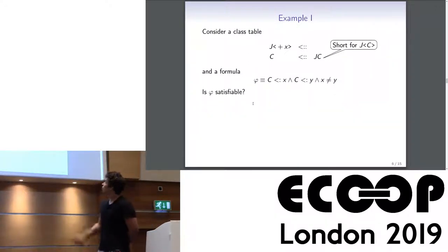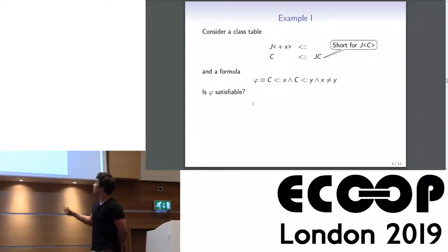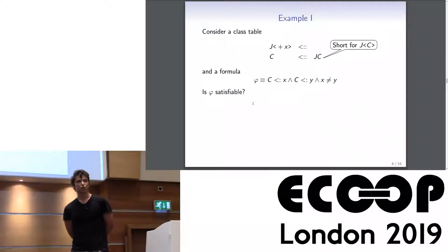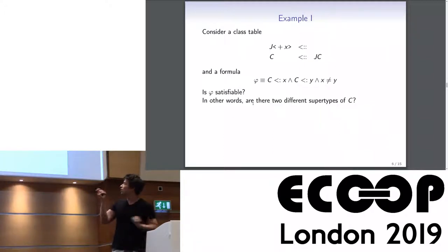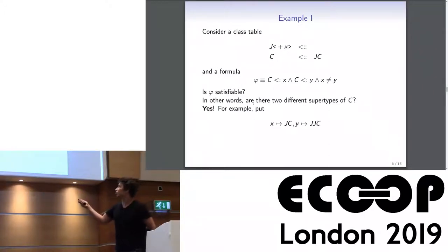Now let's go to the theory. Starting with a simple example: we have a class table with a covariant type J and constructor C which inherits J of C. Given a formula with variables X and Y, we want to find a ground type substitution satisfying it — essentially asking whether there exist two different supertypes of C. Easily, for example, C and J of C, or J of C and J of J of J of C.